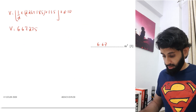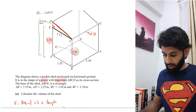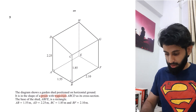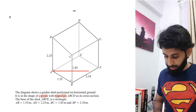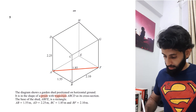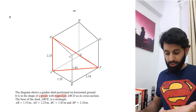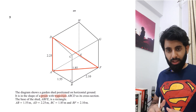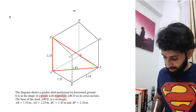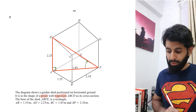Now for Part C — worth four marks — we need the angle of elevation of D from F. Whenever working out angle of elevation or depression, it's best to construct a right-angle triangle. The angle of elevation of D from F means I draw a right triangle where the vertical side is perpendicular to the horizontal base, giving a 90-degree angle at the base.